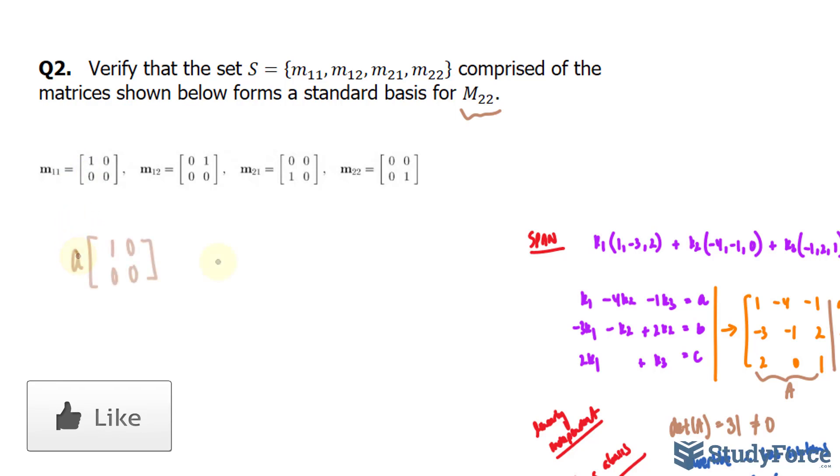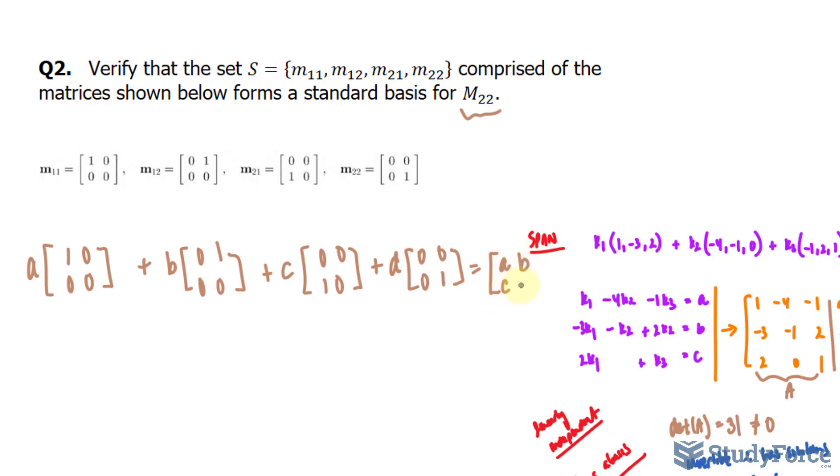To be clear, I'll multiply this by A, and I'll add it to this matrix times B, plus C times the third matrix, plus D times the last. The sum of these equals our fifth matrix, which has the elements A, B, C, and D.